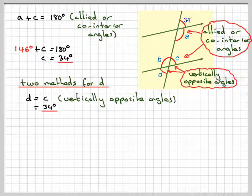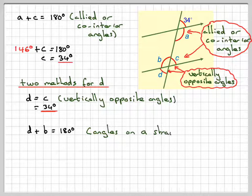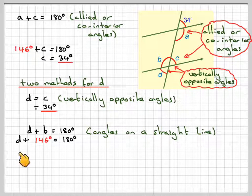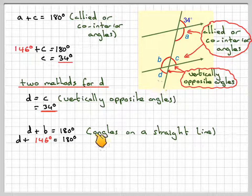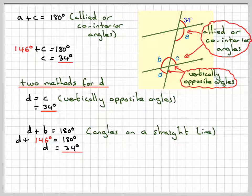Or, because these two are on a straight line, we can say that D plus B equals 180 degrees. Because the angles on a straight line, we know that D plus 146, because we've already calculated this to be 146, equals 180, and that will also give that D equals 34.